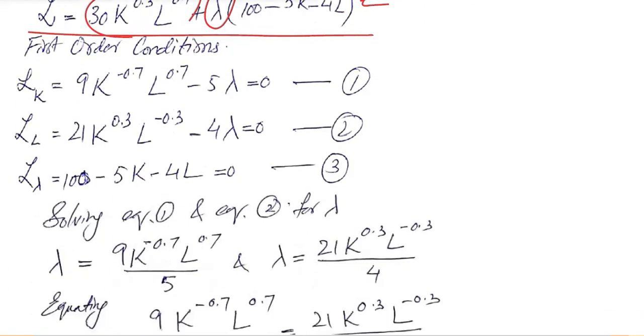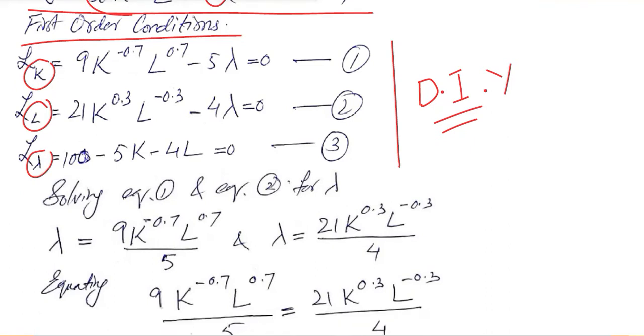Now you know this process of finding the first order conditions simply by taking the derivatives with respect to the first, second independent variables and the Lagrangian multiplier. So this is a small DIY because you have been doing other applications before that I have shared with you. The last one was of the utility function, how we maximize it.